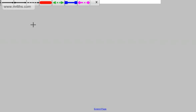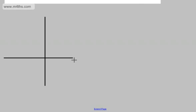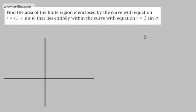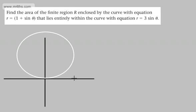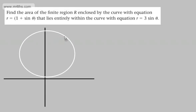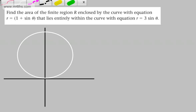Let's first sketch these up. In one of our videos, we looked at sketching polar equations and we looked at 3 sin θ. 3 sin θ is going to be a circle, and it's going to look something like so. This point here is going to be 3, and we're going to have the point at 3 over 2, and then this one at 3. These are just reference points for us.